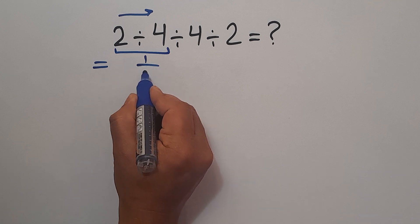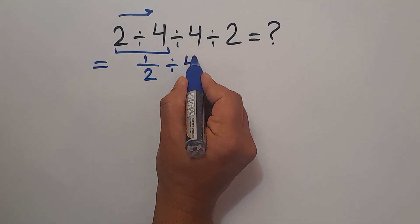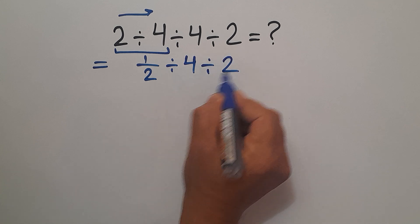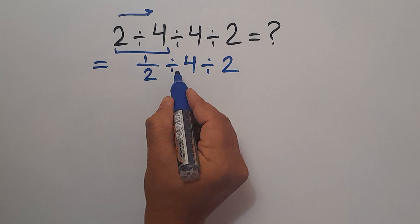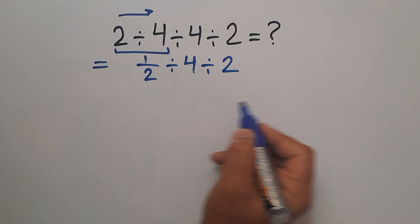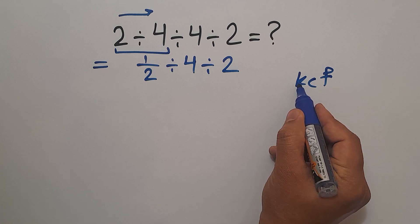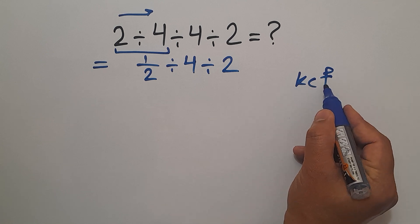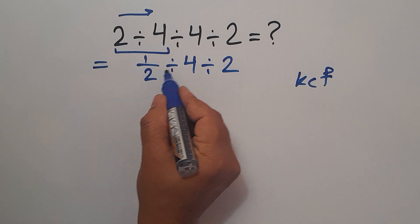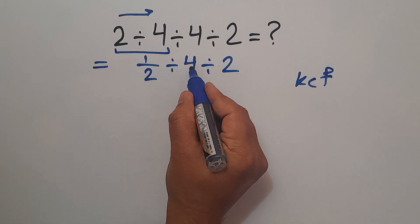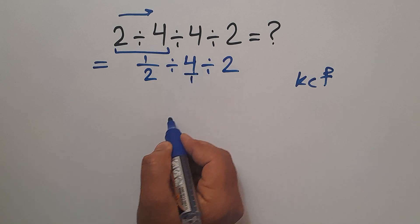1 over 2. Now let's recopy this: divided by 4 and divided by 2. Now this division, 1 over 2 divided by 4, according to the KCF rule: K stands for keep, C stands for change, and F stands for flip. Keep the first fraction, change division to multiplication, and flip the second fraction which is 4 over 1.